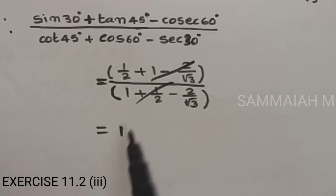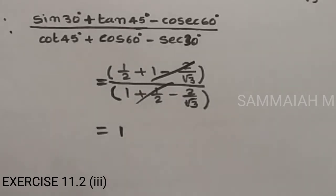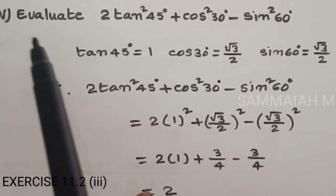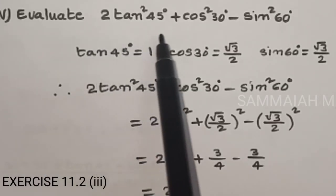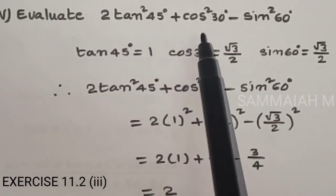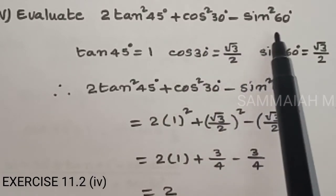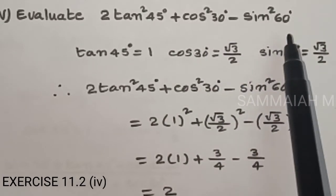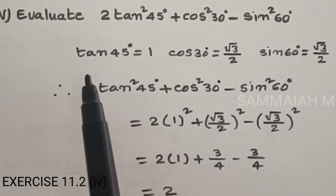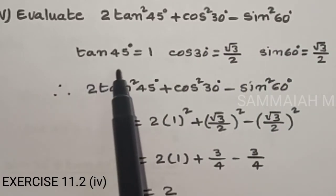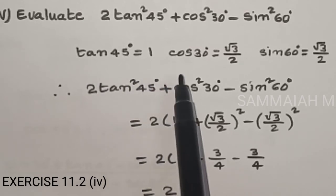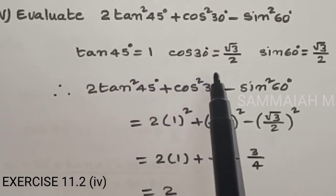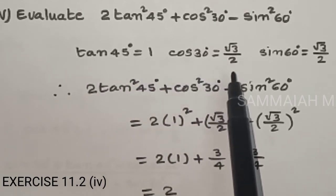Evaluate 2 tan squared 45 degrees plus cos squared 30 degrees minus sin squared 60 degrees. Here tan 45 degrees is 1, cos 30 degrees is root 3 by 2.